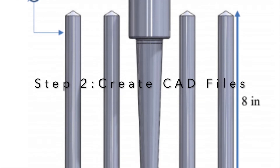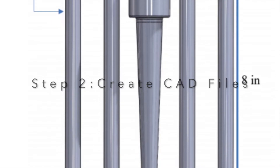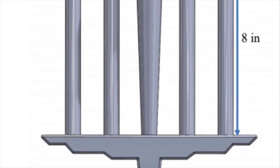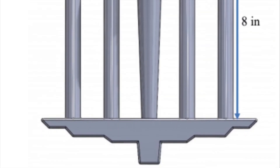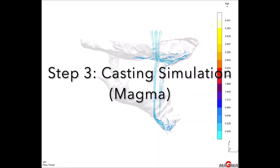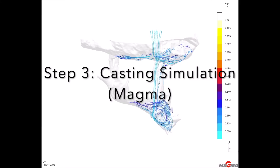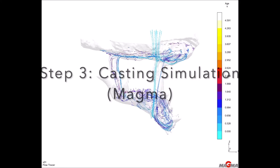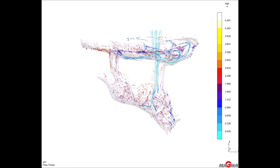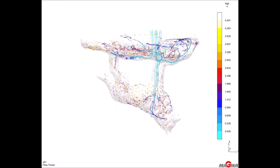Our solution starts with creating the desired part in CAD software and then slicing that model into code for the 3D printer. Magma is a casting simulation software that allows users to design gating systems and simulate the casting process.